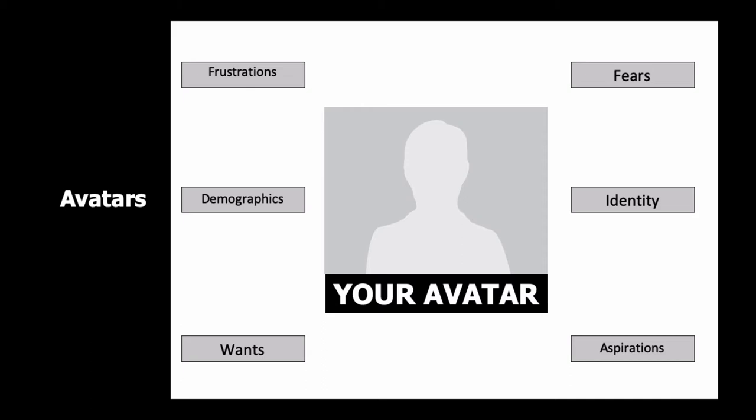We can start to pull on their frustrations and fears. I actually pull out this avatar for every piece of marketing I do — around a particular issue, I'll write down their key frustrations, key fears, key wants, and key aspirations in regard to that issue, then write a piece around that. You can use it as an overarching plan for your marketing, but also to build something targeted for a particular avatar.